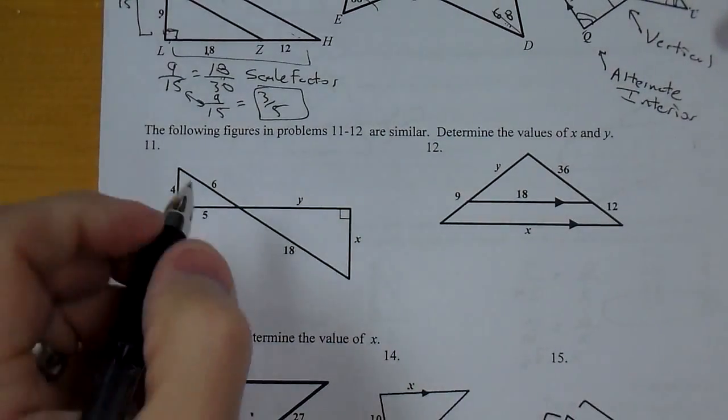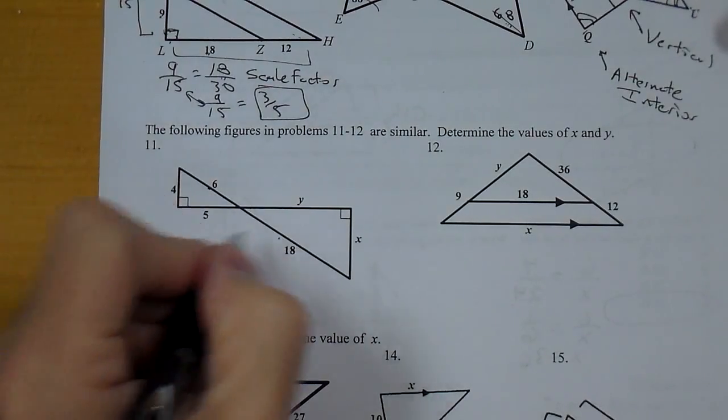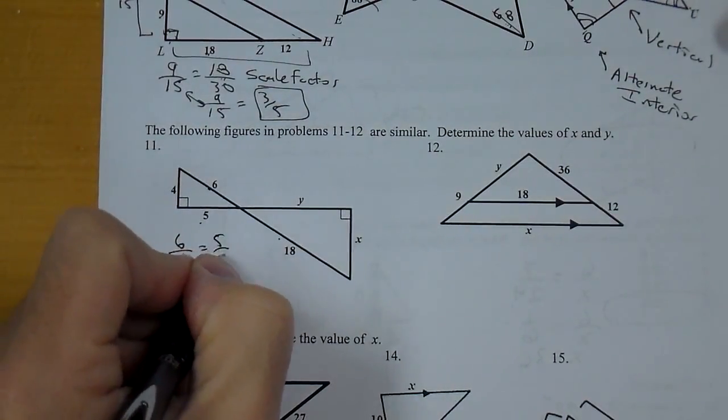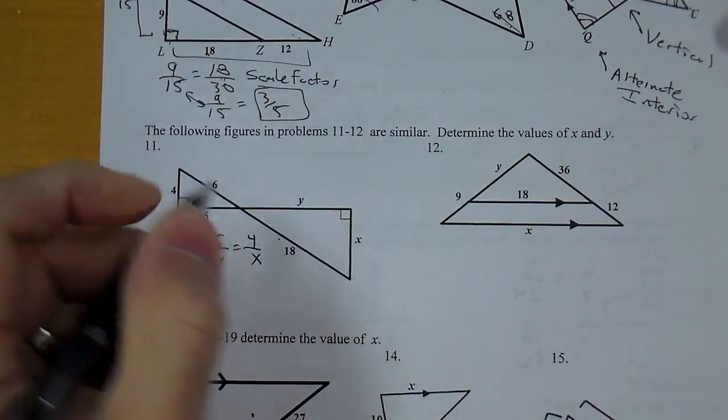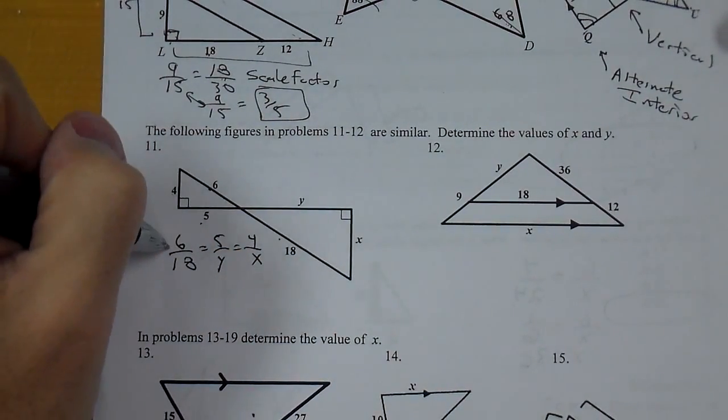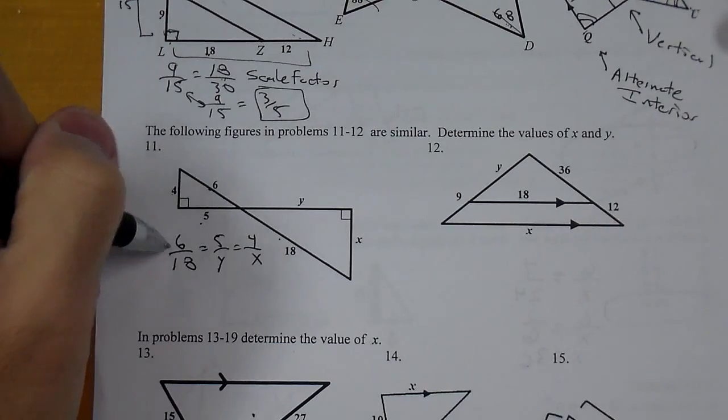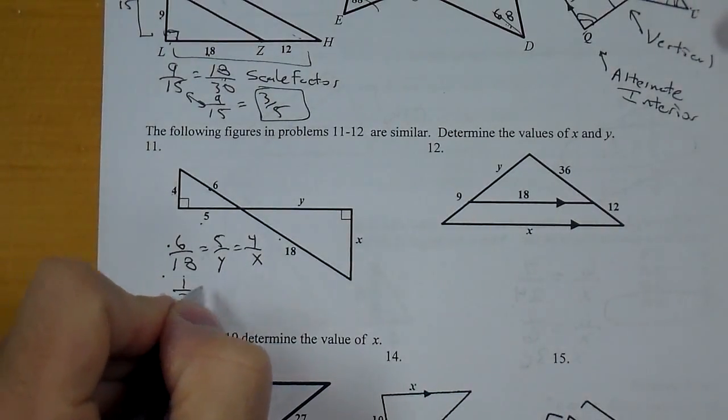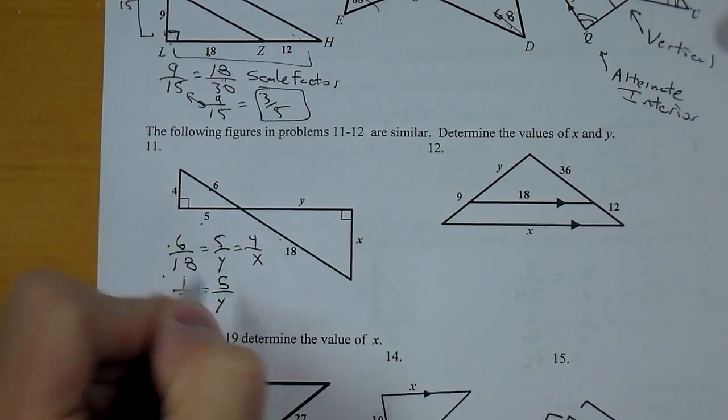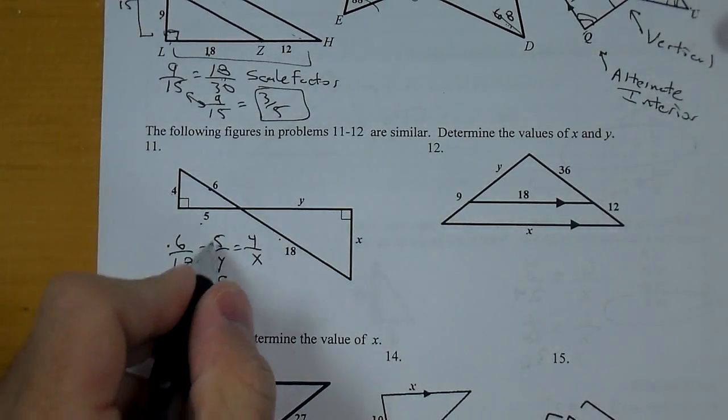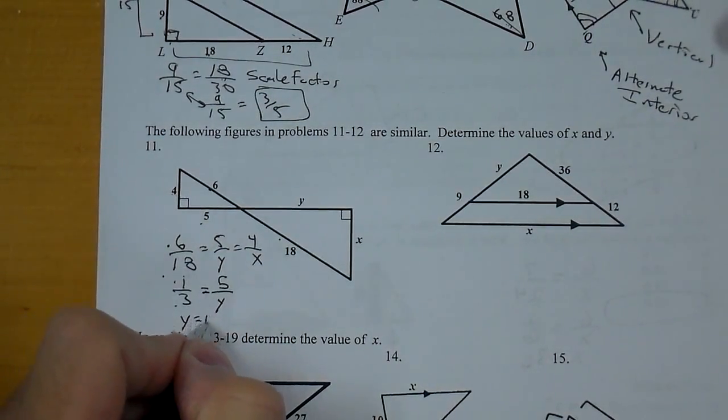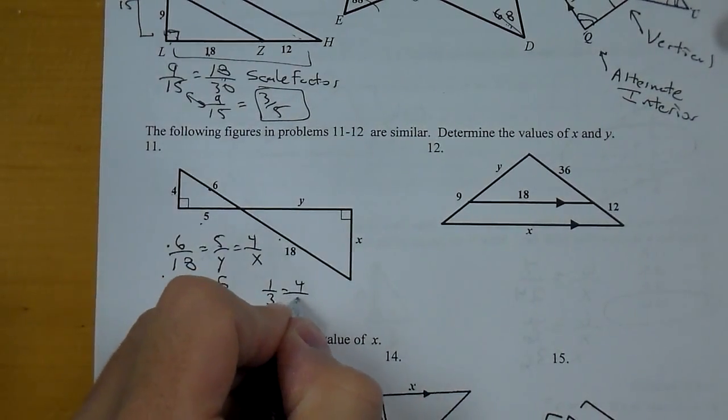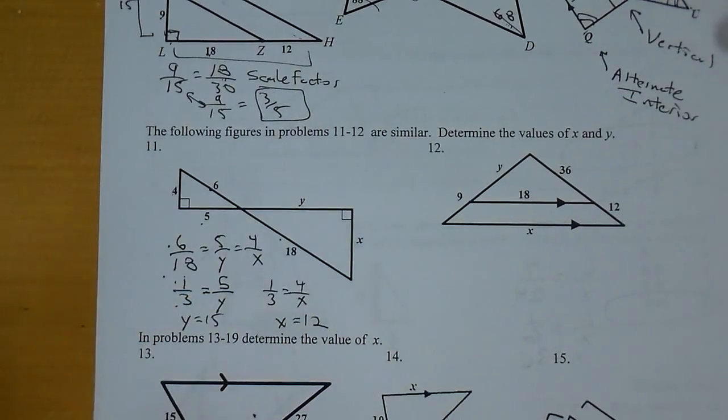For number 11, we need to solve here. So I know 6 and 18 is a ratio. 5 and Y. And 4 and X. And if I look, 6, 5, and 4 all come from the same triangle. They're all top values. 18, Y, and X are all bottom. I'm going to reduce and make this 1 third. And then I can solve each one. If I do that, 1 third equals 5 over Y, becomes Y equals 15. And then take that over, 1 third equals 4 over X, and X comes out to be 12.